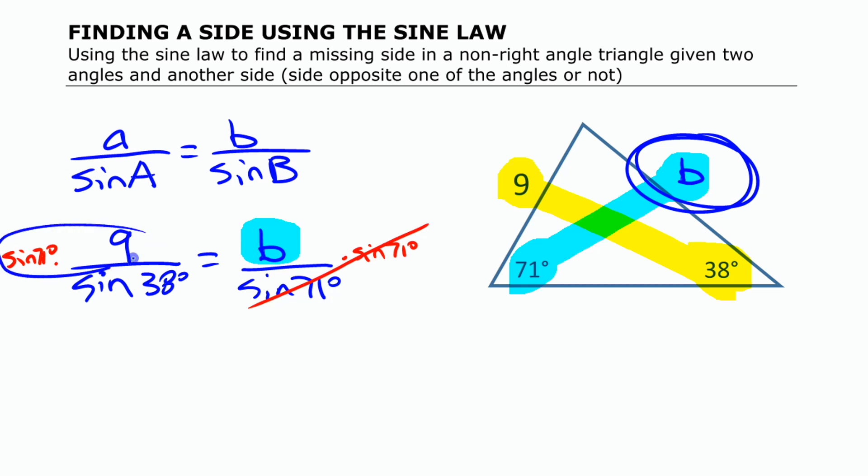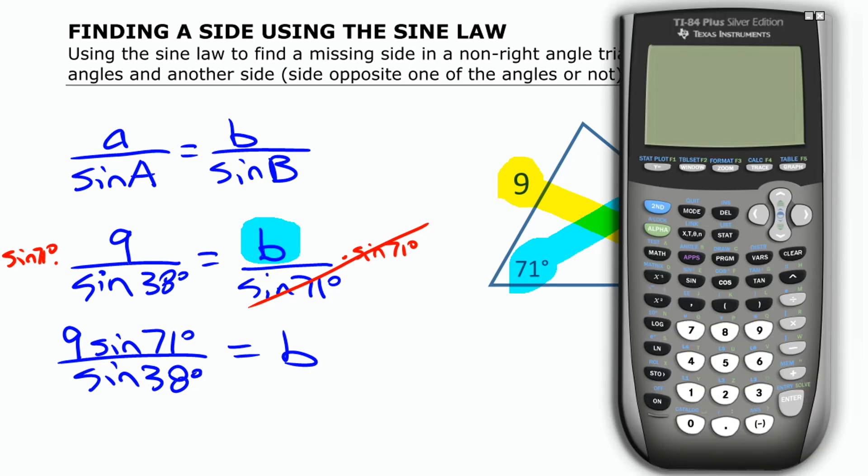Or I can just rewrite it the way it's going to end up there, which is I'm going to have 9 times sine 71, which I'm going to write as 9 sine 71, and the bottom divided by sine 38. And that's going to give me my b value, my missing side there.